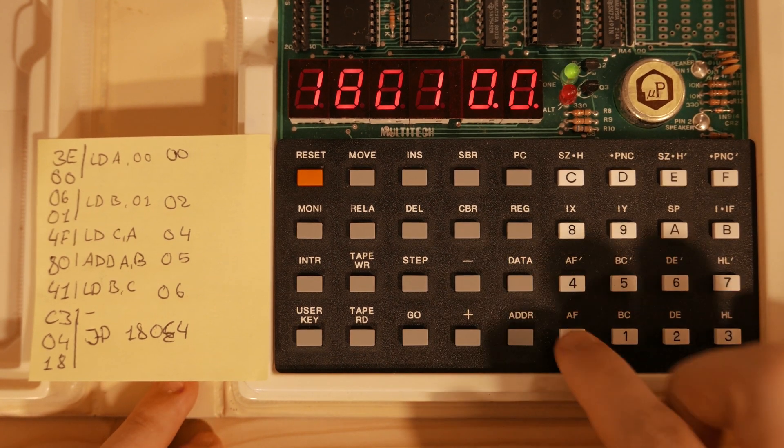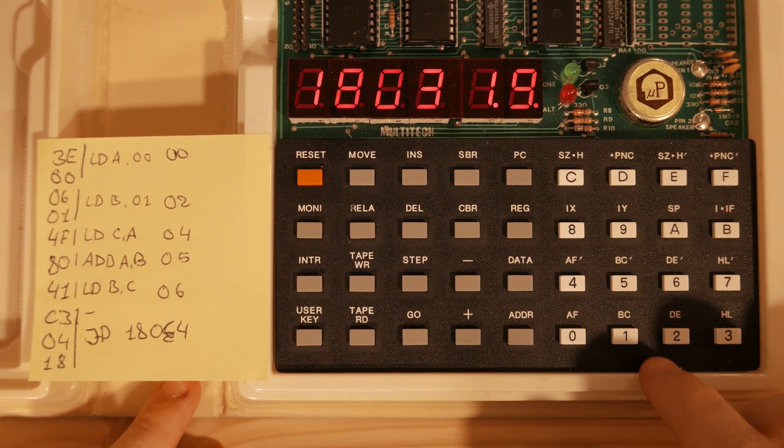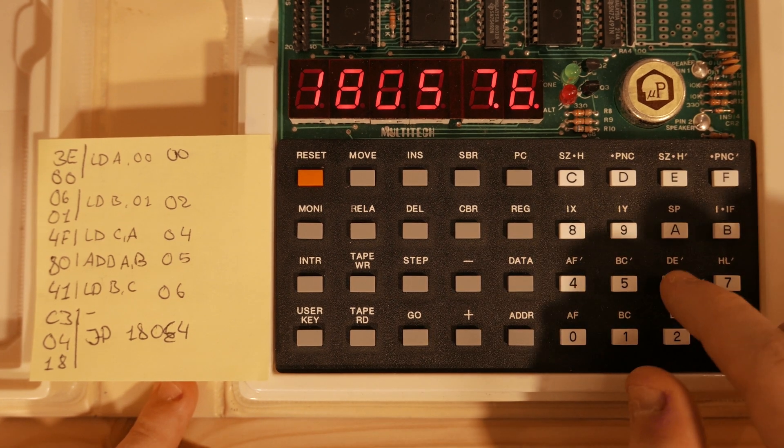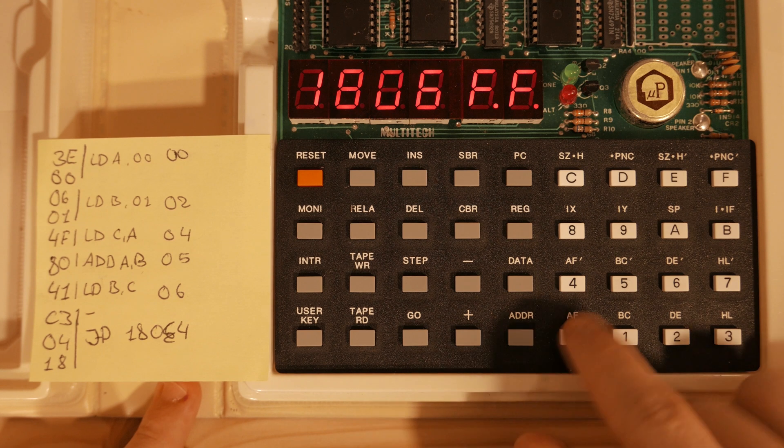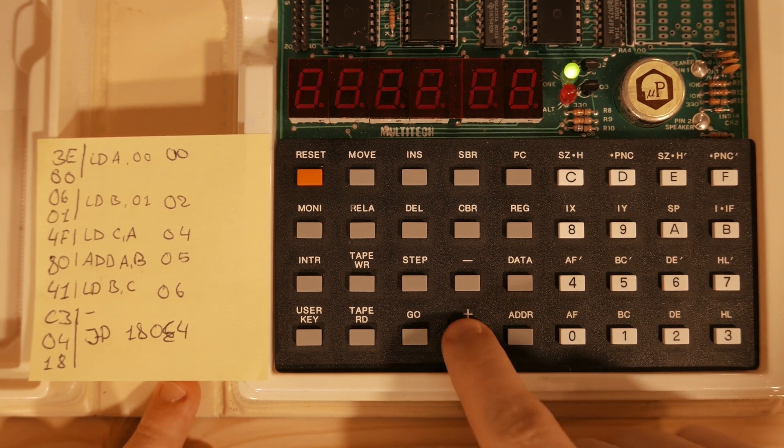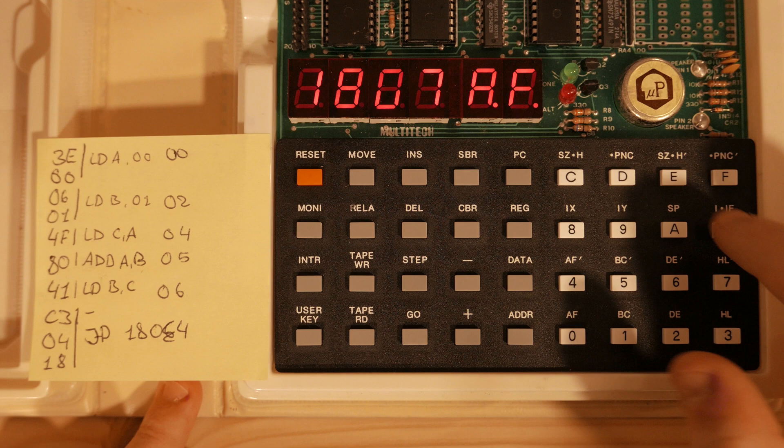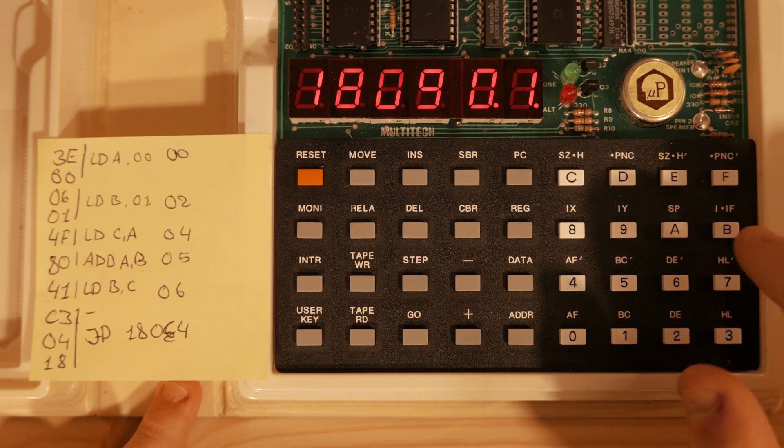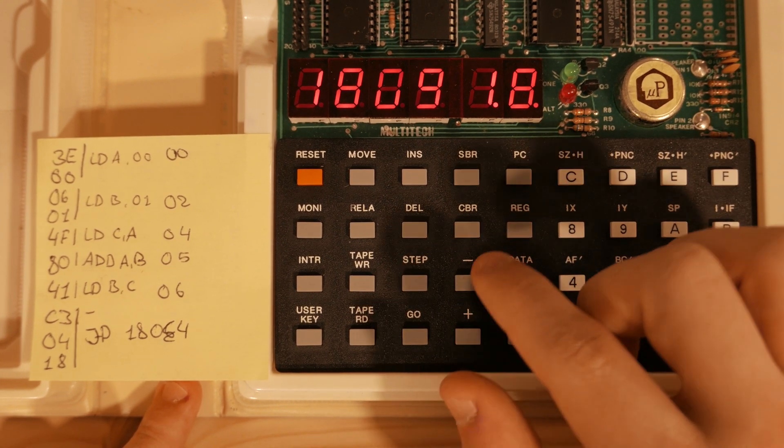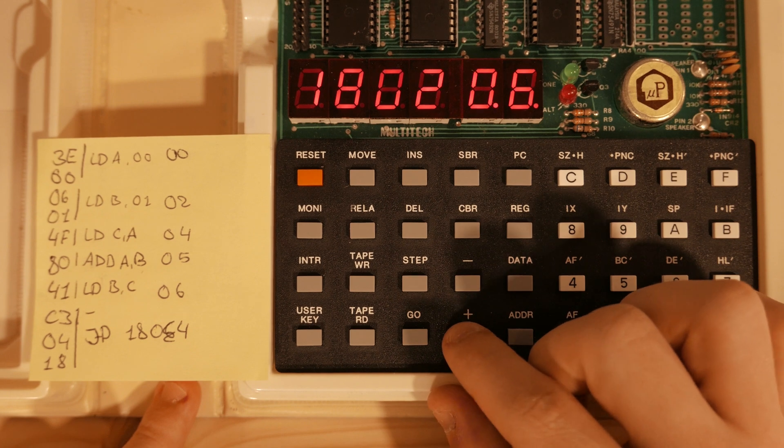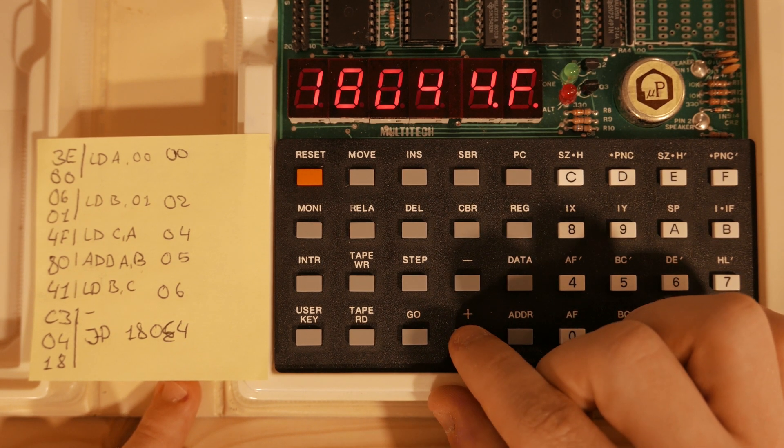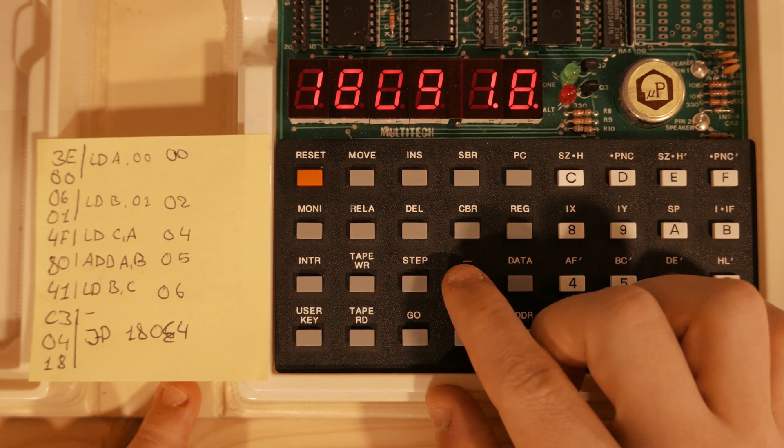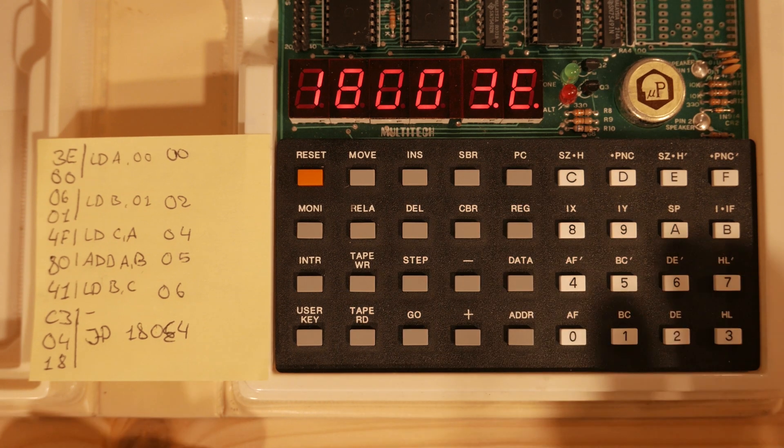Data. That's 3E, 00, 00, 06, 01, 4F, then 80, then 41, then C3, then 04, then 18. And I believe that is the entire program. 3E, 00, 00, 06, 01, 4F, 80, 41, C3, 04, 18. Right. Great.